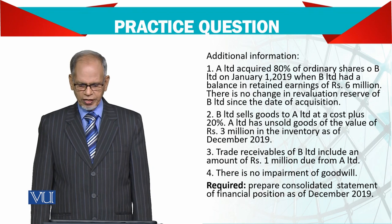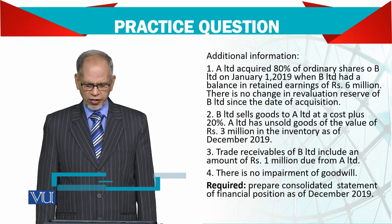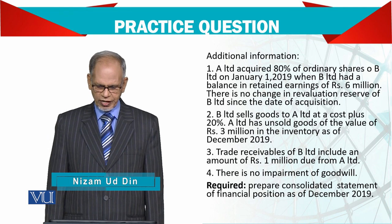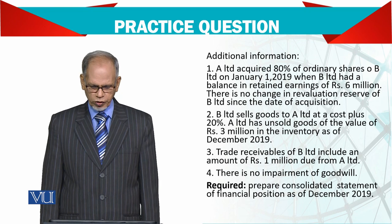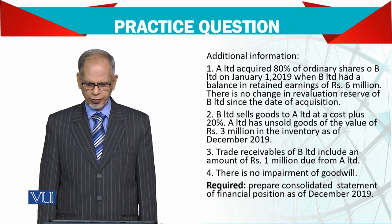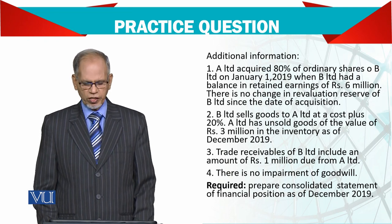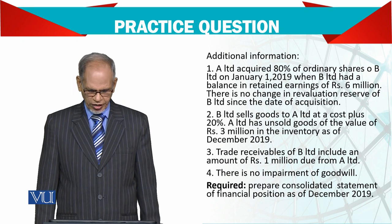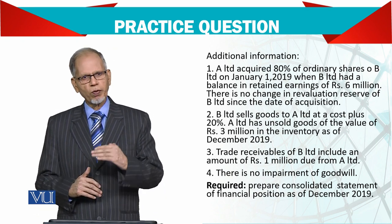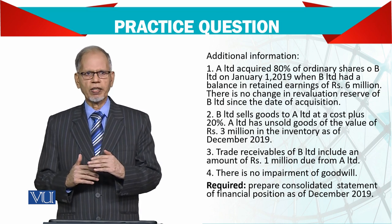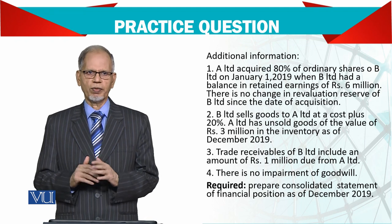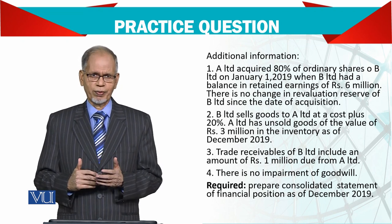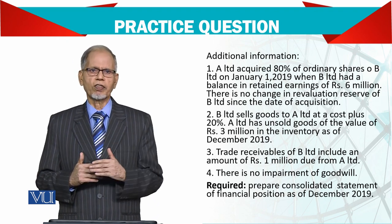A Limited acquired 80% of the ordinary shares of B Limited on January 1st, 2019, when B Limited had a balance in retained earnings of 6 million, and there is no change in the revaluation reserve of B Limited since the date of acquisition. The reserves on that date are pre-acquisition. After that date, any profit earned is post-acquisition, and your share begins from the day you acquired the shares. Pre-acquisition profit cannot be included in your profit and loss.